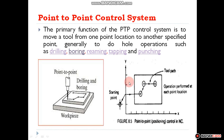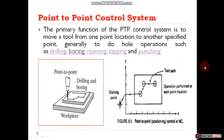Examples of point to point control systems are drilling, boring, reaming, tapping, and punching. You can see in this image where we are performing a drilling or boring operation.